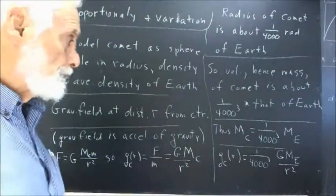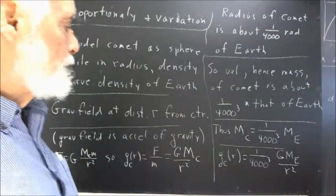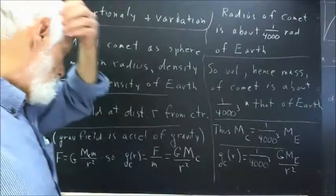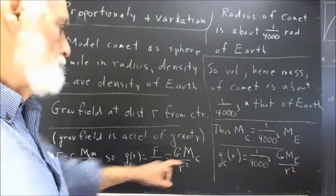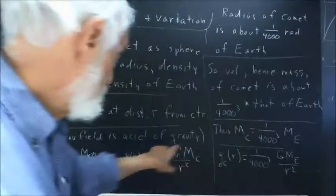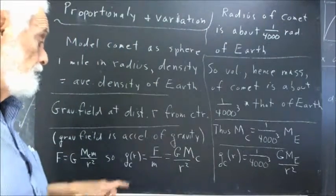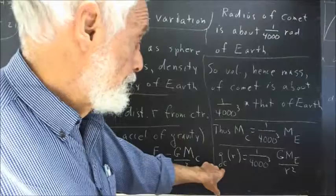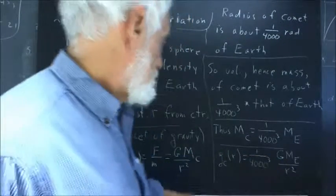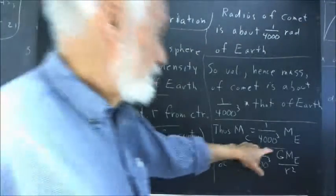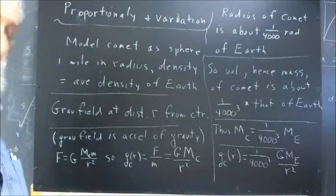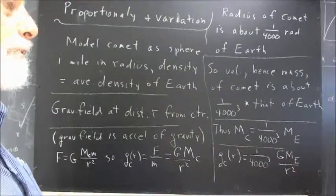Now, how does that affect this? Well, since the mass of the comet is one over 4,000 cubed times the mass of the Earth, we can replace the mass of the comet by one over 4,000 cubed times the mass of the Earth in this expression, and get that the gravitational field of the comet at distance R is one over 4,000 cubed times the universal gravitational constant mass of the Earth over R squared.